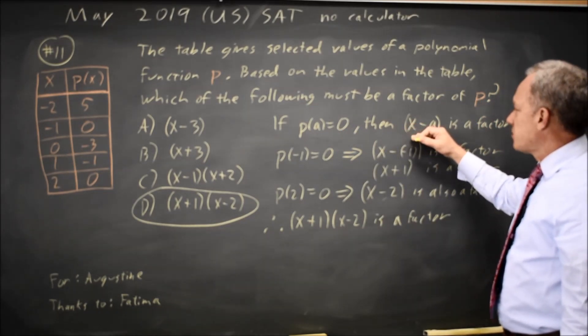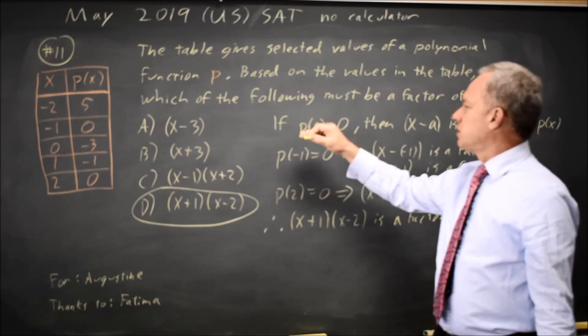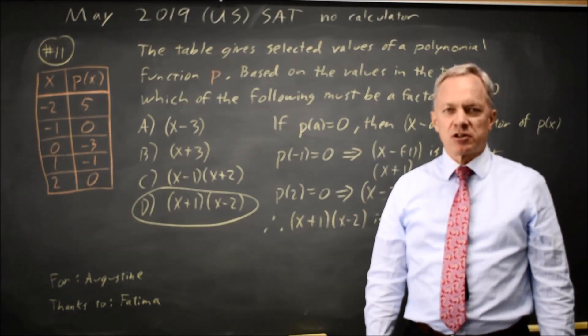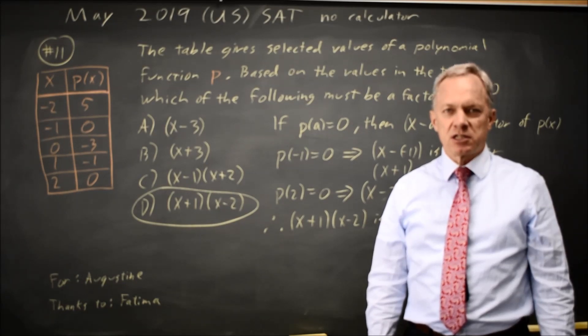Or equivalently, if X minus A is a factor, then the value of the polynomial at A is 0. This comes up a lot, so it's worth making sure that you're comfortable with this and you can use it quickly under time pressure.